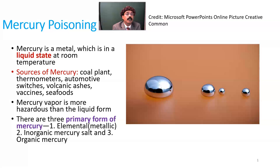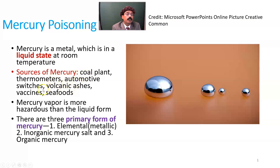Mercury is a heavy metal. It is in a liquid state at room temperature. We have many sources of mercury, like coal plants, thermometers, automotive switches, volcanic ashes, vaccines, and seafoods.